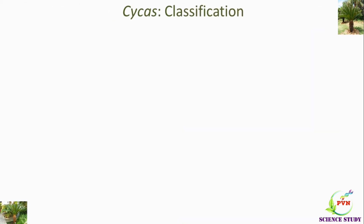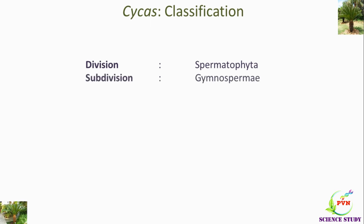Now we will study the classification or the systematic position of Cycas. Division of this plant is Spermatophyta because these are seed-producing plants. The subdivision is Gymnospermia because the ovules produced are not enclosed in the ovary, so the ovules are exposed. Ovules usually show single integument. Plants are heterosporous. Gametophytic development is endosporic. Antheridia are absent and archegonia are partially reduced. Class is Cycadophyta or Cycadopsida because the plant stem is woody and unbranched. Large pinnately compound leaves are produced. Internally, the stem shows white cortex and manoxylic wood.